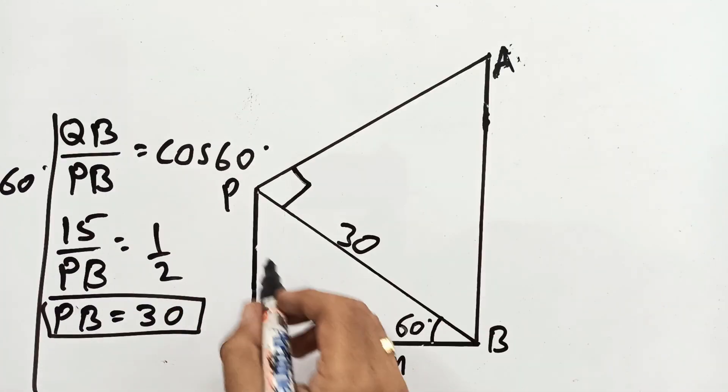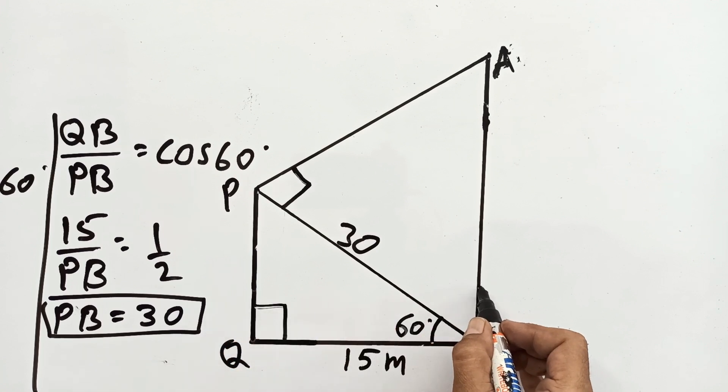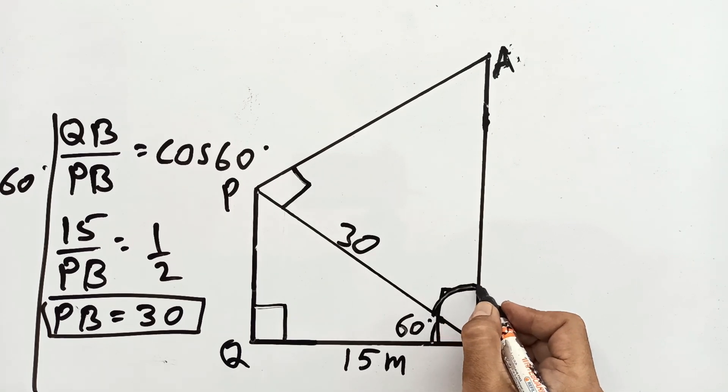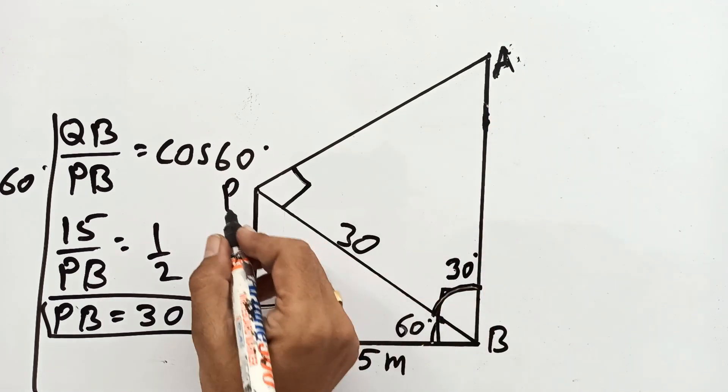Now listen here student. These towers are erect, so each angle is 90 degrees. This is also 90 degrees, and this is given 60. So 90 minus 60, this portion will be 30. So angle ABP is 30 degrees.